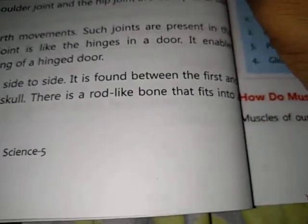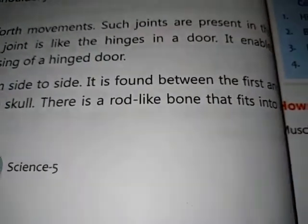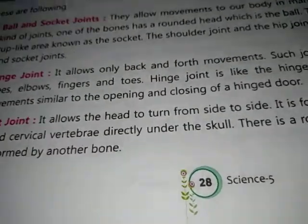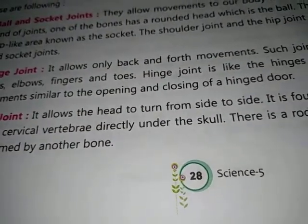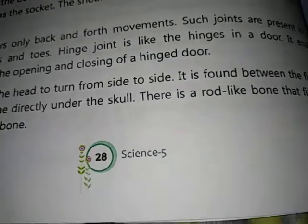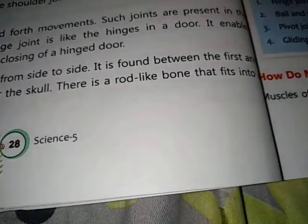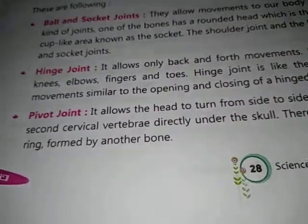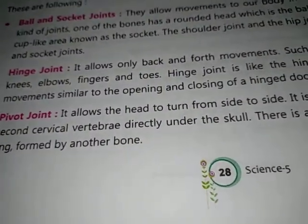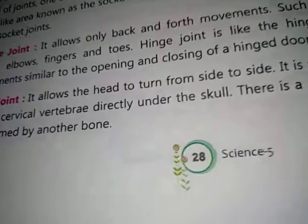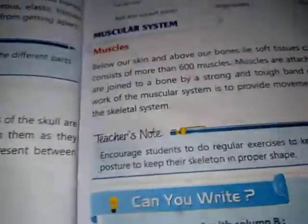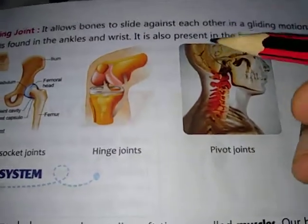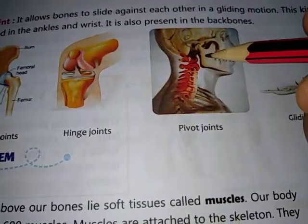Now let's move to the pivot joint. It allows the head to turn from side to side. It is found between the first and second cervical vertebrae, directly under the skull. There is a rod-like bone that fits into a ring formed by another bone.